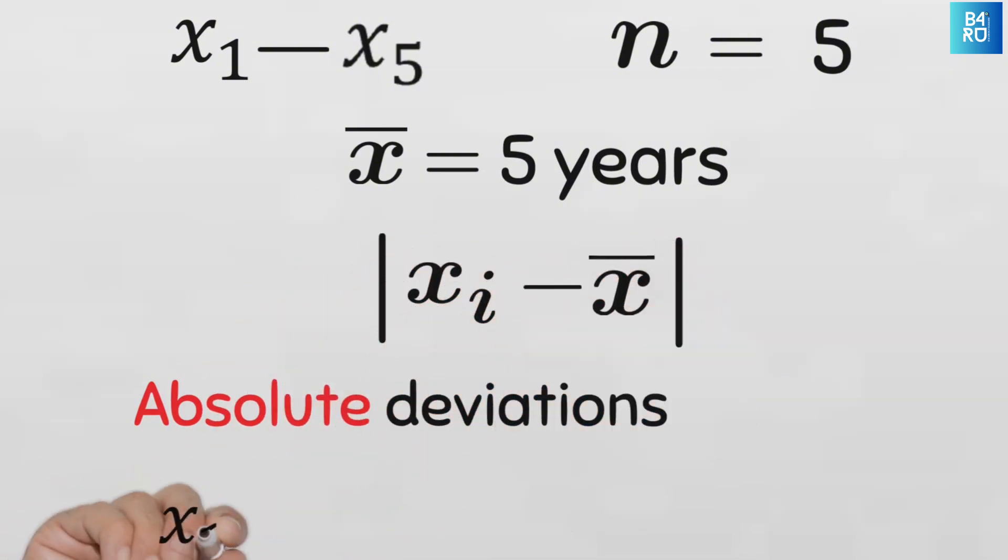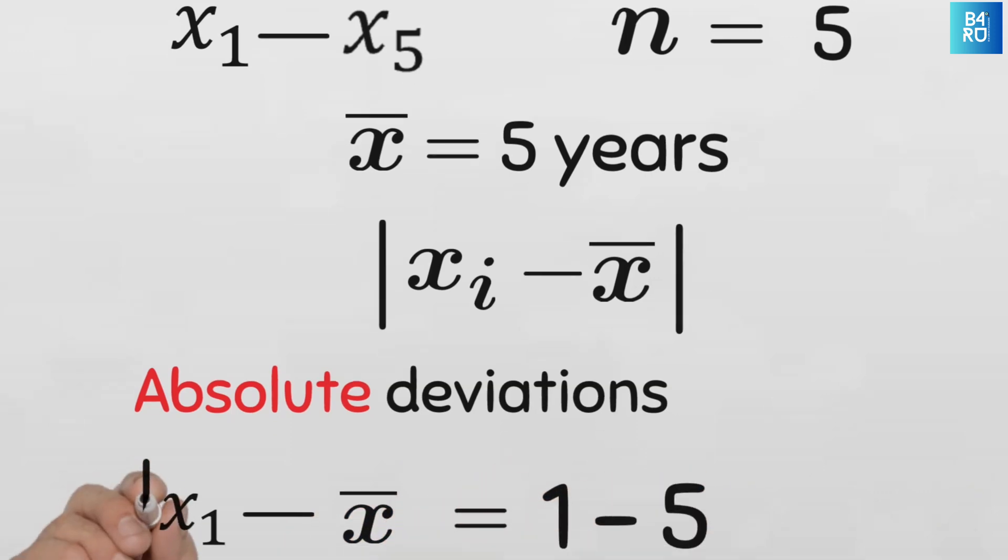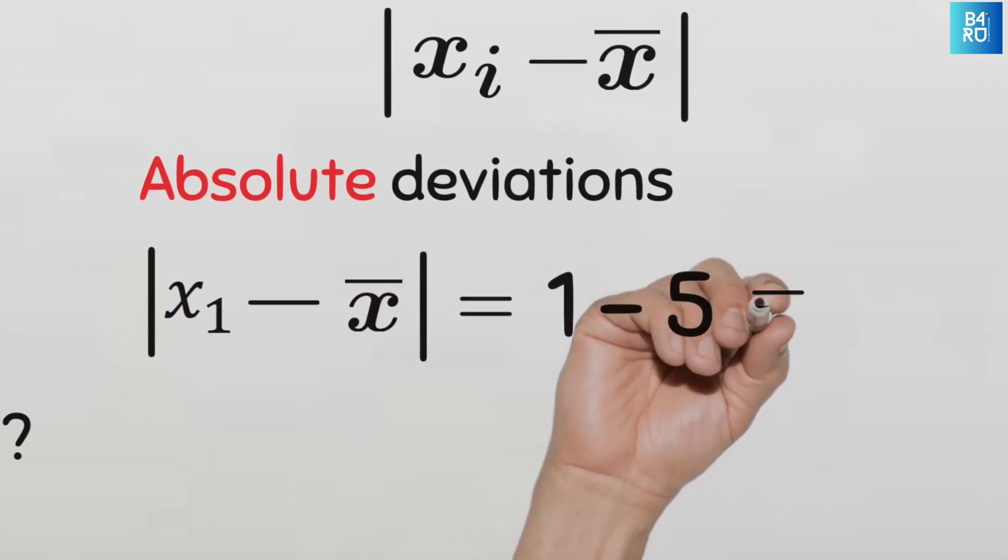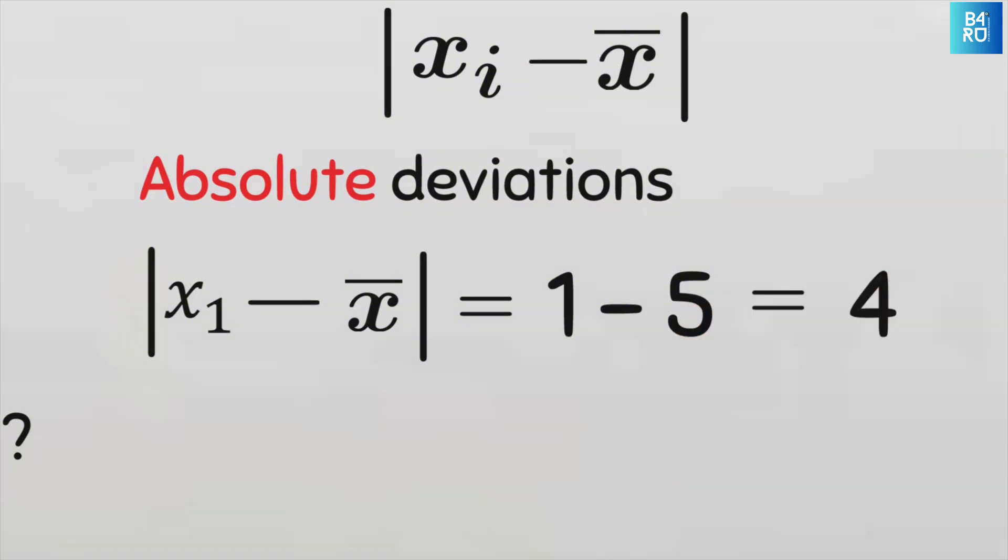For the first value x1, the absolute deviation of x1 from the mean will be x1 minus x bar, and that will be 1 minus 5. That's minus 4. And when we apply the modulus, the absolute value will be 4.